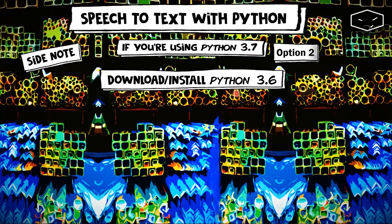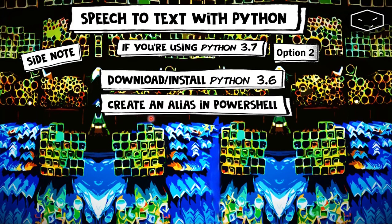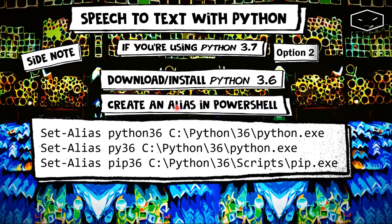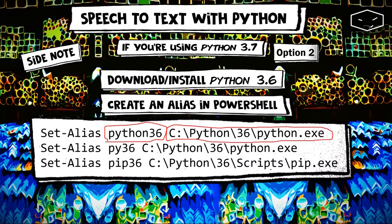So, to solve that problem, we need to create an alias in PowerShell. We type Set-Alias and then the alias name — in this case, Python36. Then we type the path for the file we want the alias to refer to. In this case, Python36 refers to the executable at C:\Python36\Python.exe.